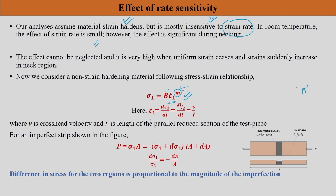The true strain rate ε̇₁ is defined as dε₁/dt. In a tensile test, ε̇₁ = v/l, where v is the crosshead velocity and l is the instantaneous gauge length. So true strain rate depends on both crosshead speed and the instantaneous gauge length.